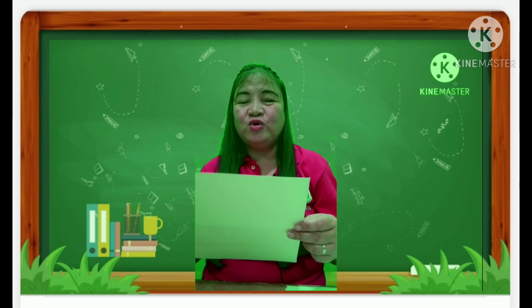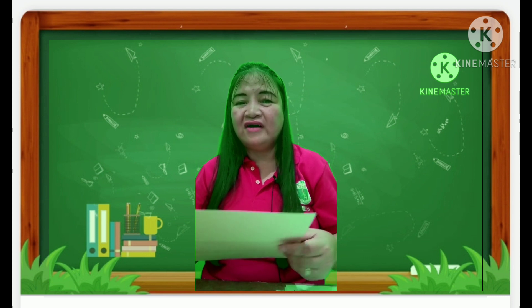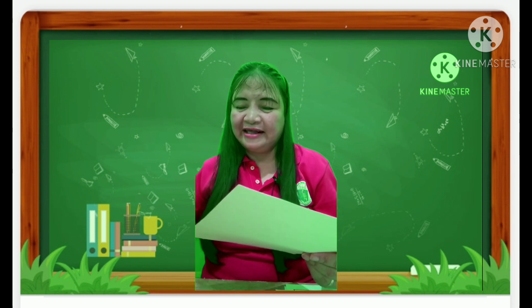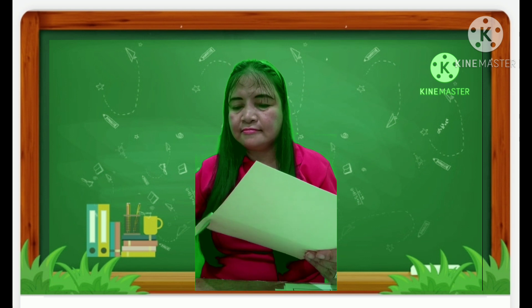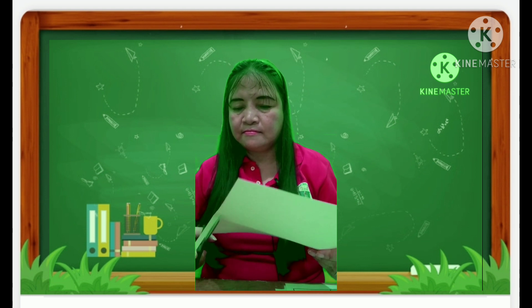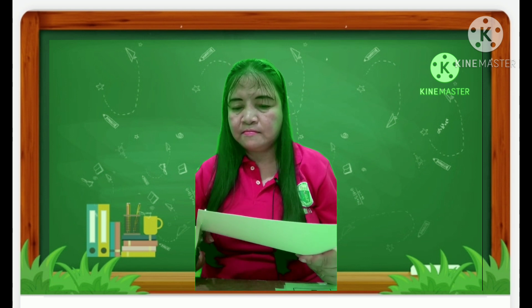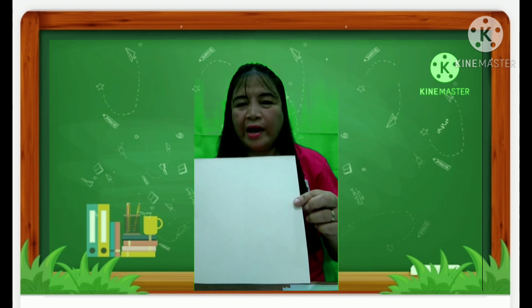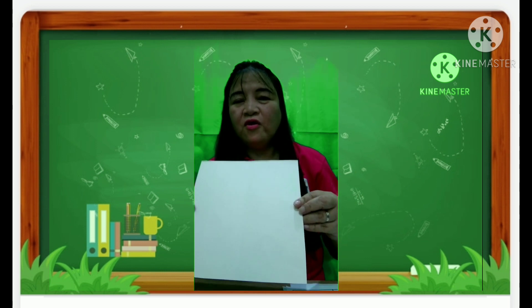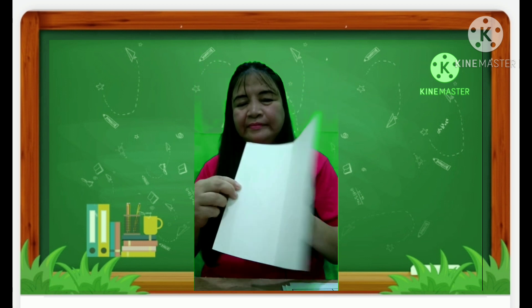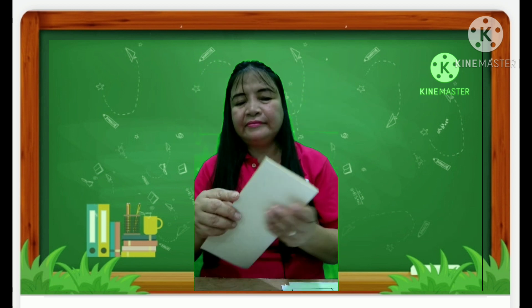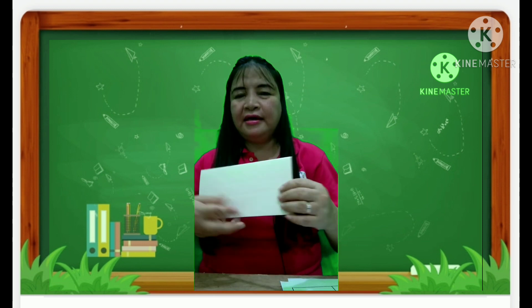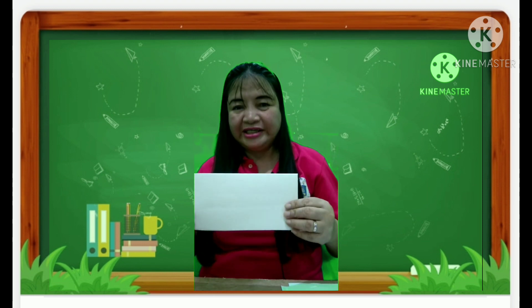Cut the folder into a square with a length of 8.5 on each side. We have here a square. Now we are going to fold it into 2. Set aside first.